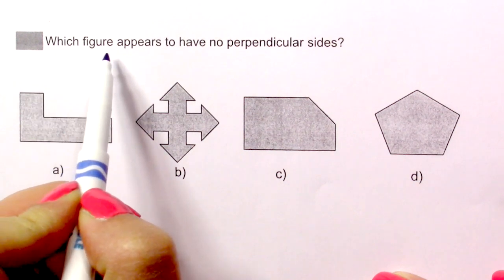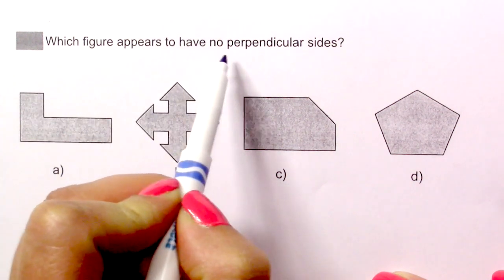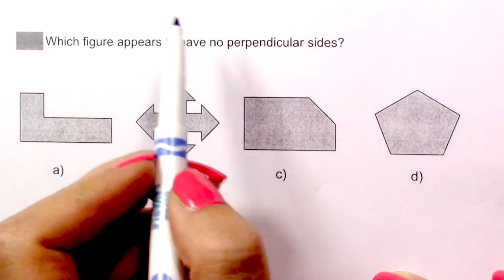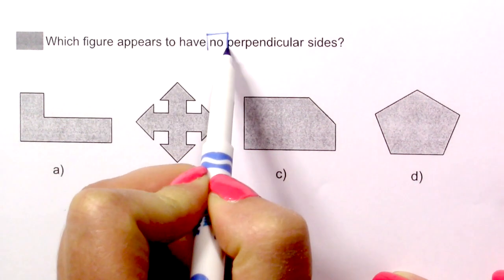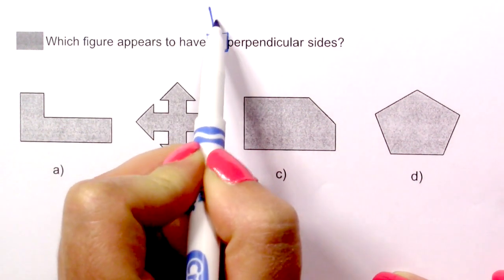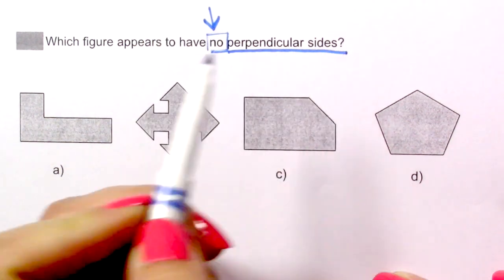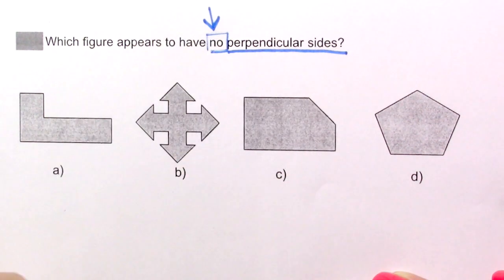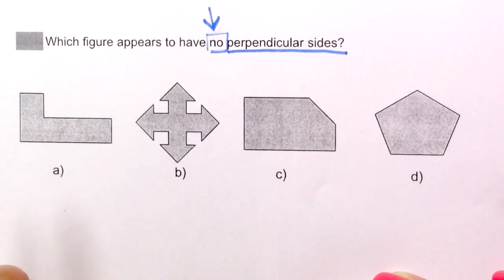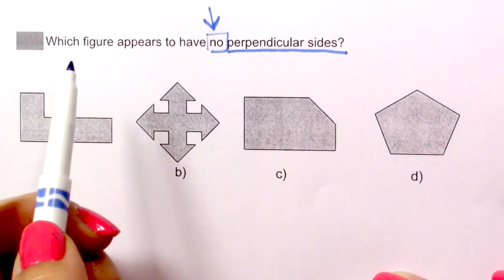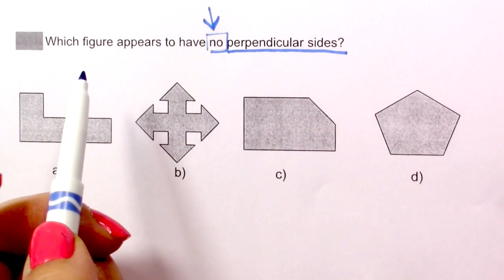Which figure appears to have no perpendicular lines? Can you identify the keywords? We have the word 'no' — this is very important — and 'perpendicular side.' So what do we have to look for? A shape that does not have perpendicular sides.